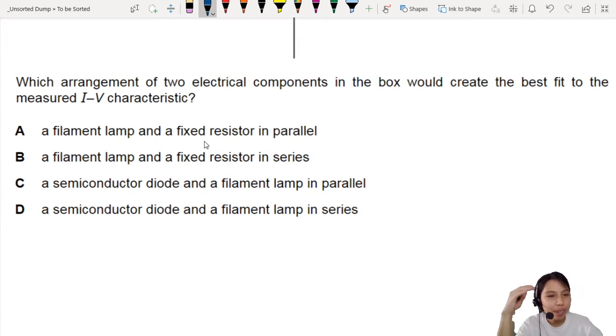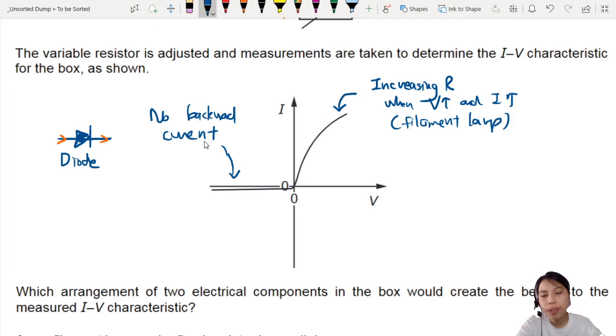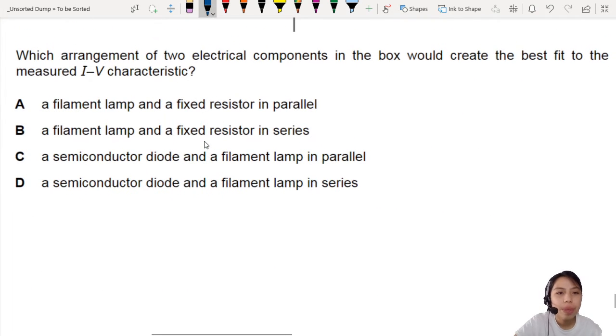From here, we can kind of guess. If we believe that our guesses there should be a diode and filament lamp, we can cancel out some stuff already. So diode, filament lamp, I think C and D might be possible choices.